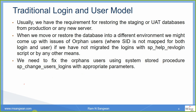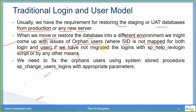Usually we have a requirement for restoring staging or UAT databases from production, or moving to any new server — migration from developer to UAT, or from UAT to production. When we move or restore the database onto a different environment, we might come up with the issue of orphan users, where the ID is not mapped to both the login and the user, because the user does not exist on that Windows machine if we have not migrated the login using sp_help_revlogin or any other means.